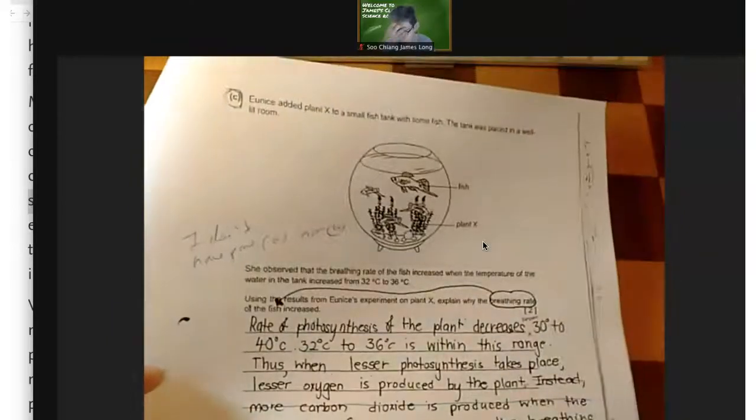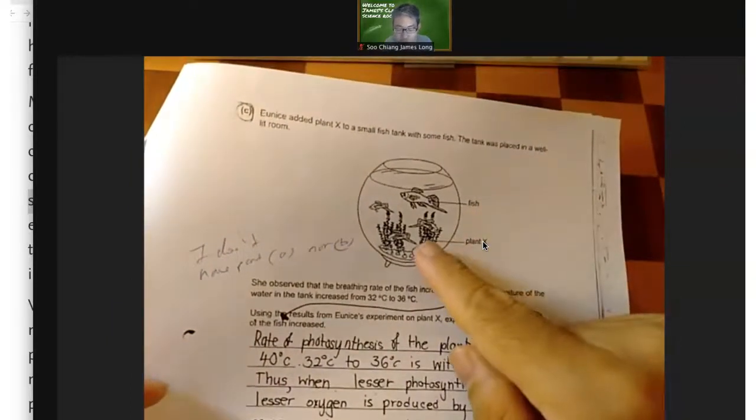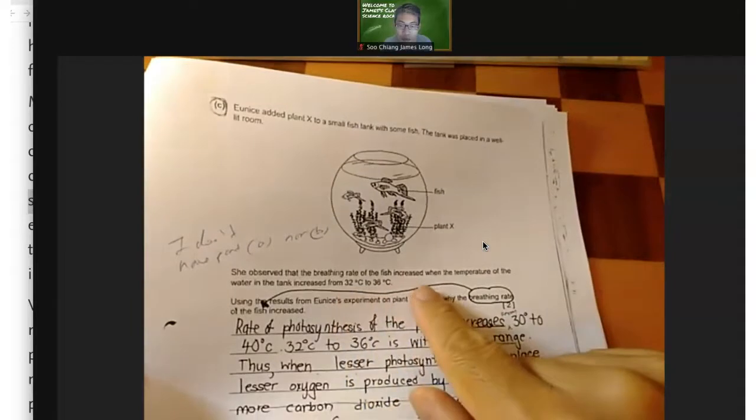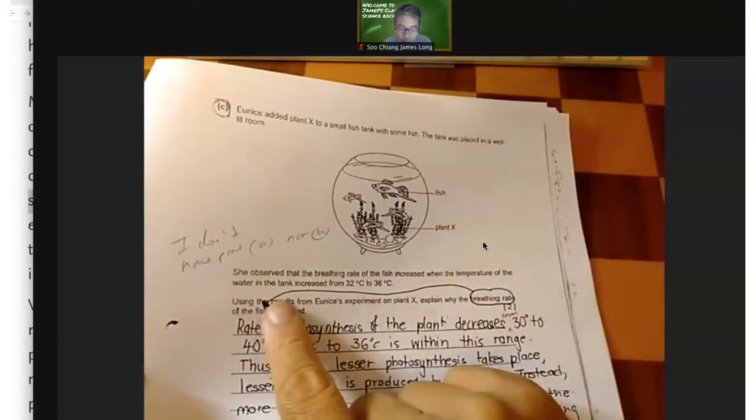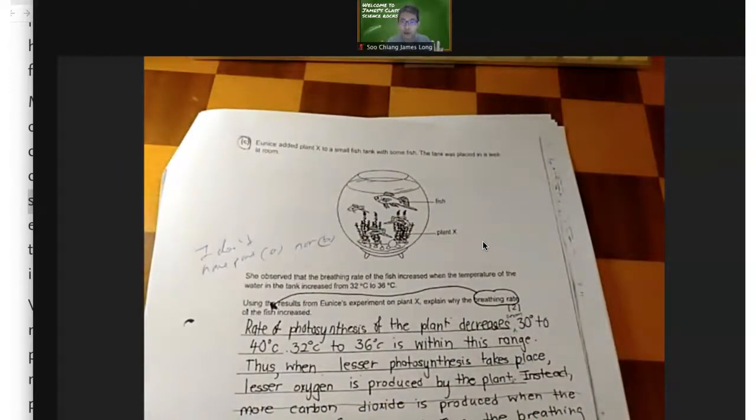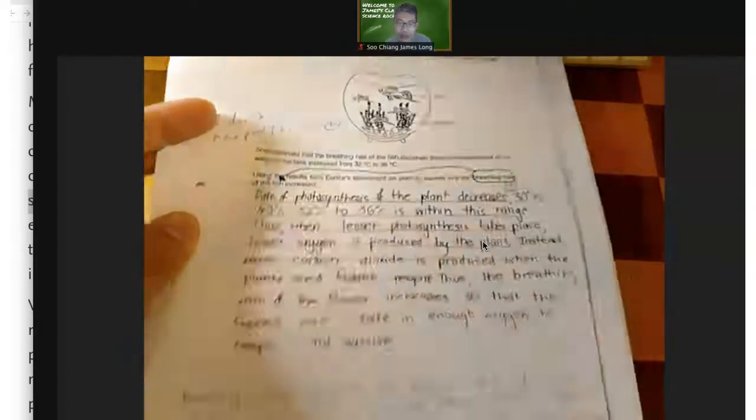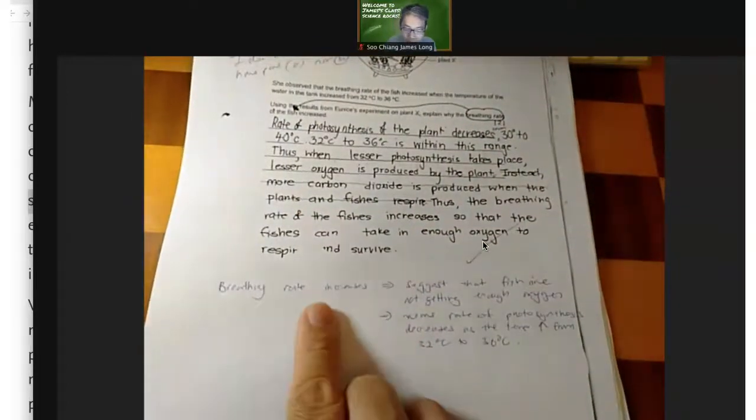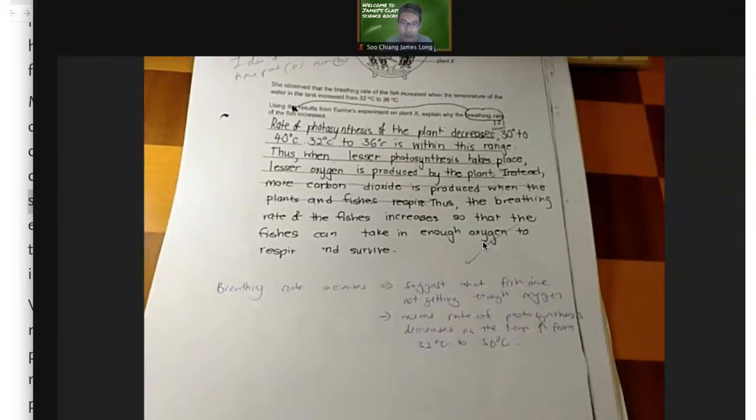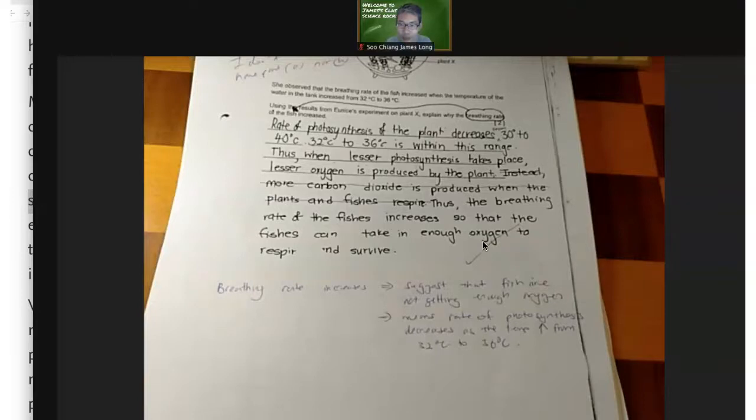Now, you didn't give me part A and part B and this is part C, but I think I was still able to do this kind of reasoning. Eunice placed a fish inside a tank with plants, then observed the breathing rate start to increase when the temperature of the water increases. So what does it mean when the breathing rate increases? It means that they want to take in more oxygen. But why would they want to take in more oxygen? It's because there is not enough oxygen present.